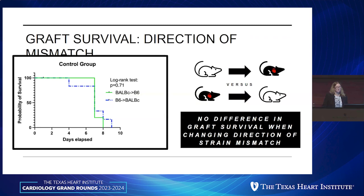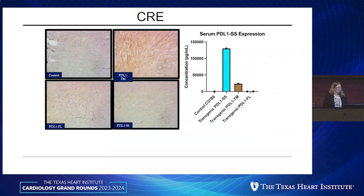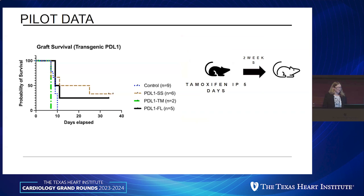The model uses BALB/c to C57BL/6. We were uncertain whether we could flip the orientation of donor and recipient, so we did a series of studies to confirm the direction of the mismatch didn't matter — and it didn't. This shows a T-cell mediated rejection from histology. We recently received the transgenic animals — serum soluble, transmembrane, and full-length versions — and very early data looking at graft survival shows a promising signal with the serum soluble and full-length forms. This is still ongoing work requiring more animals, but it provides important information about the target before moving to the pig model.